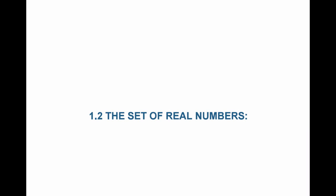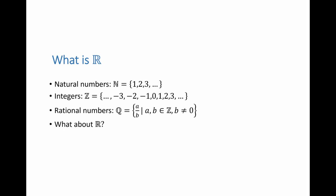We are now going to look at the set of real numbers. So what is the set of real numbers? We know what the set of natural numbers is, it's the set of counting numbers. N is equal to the set 1, 2, 3, 4, 5, and so on.